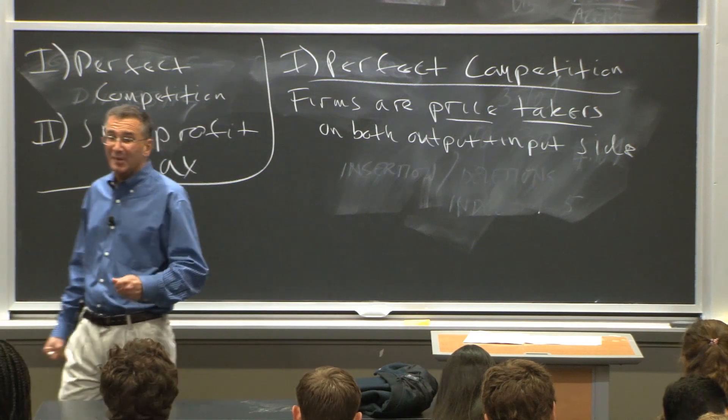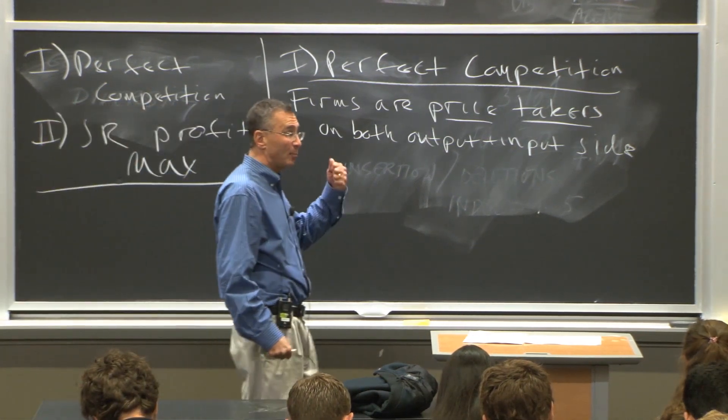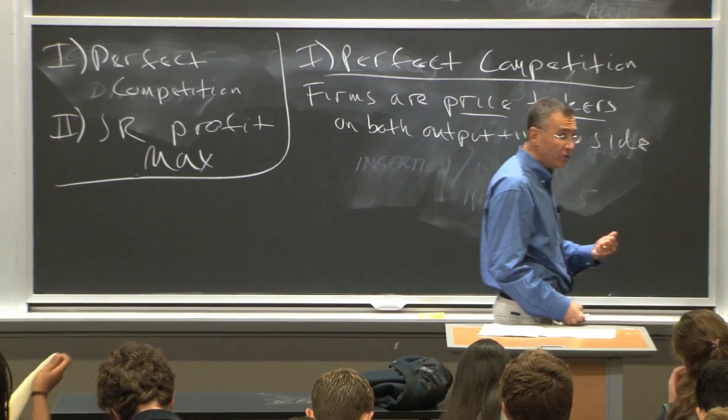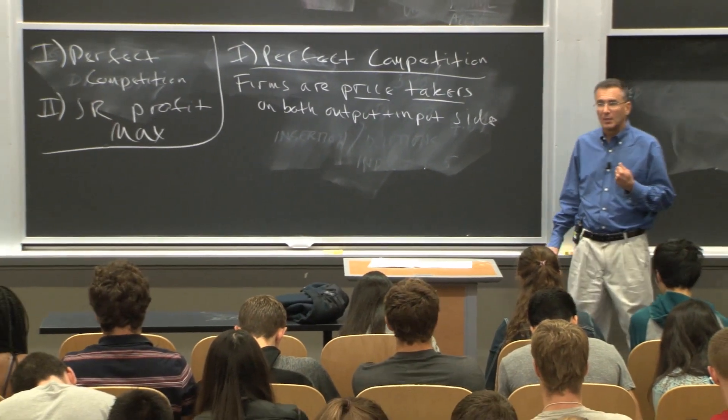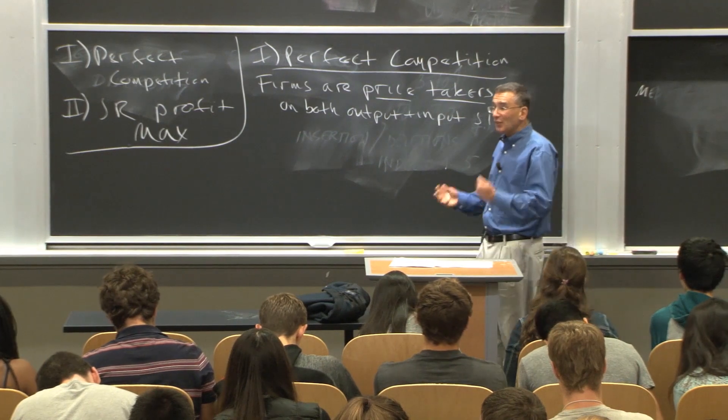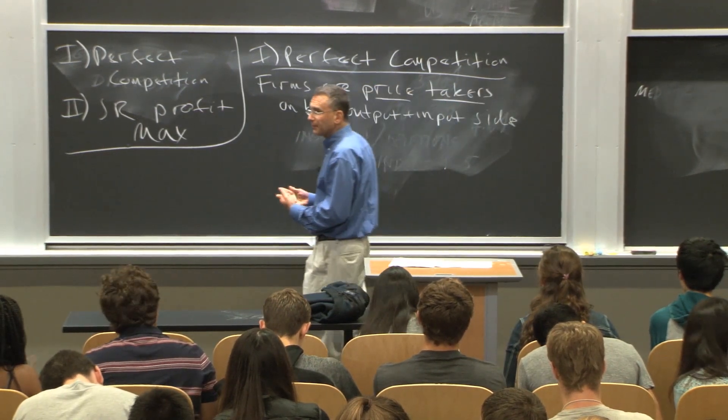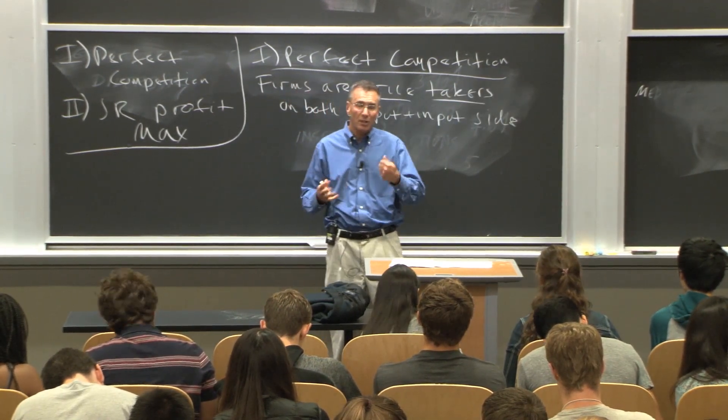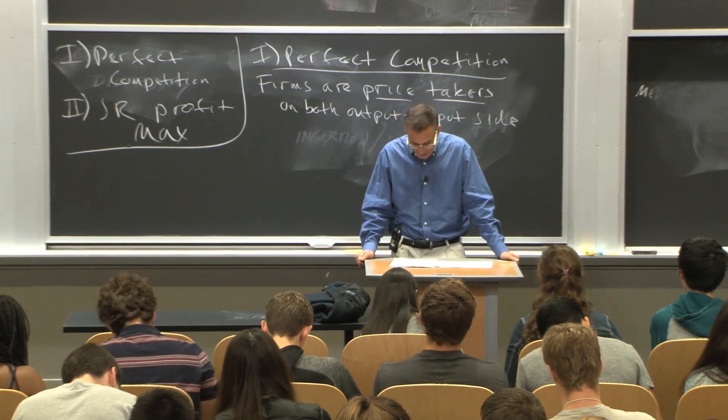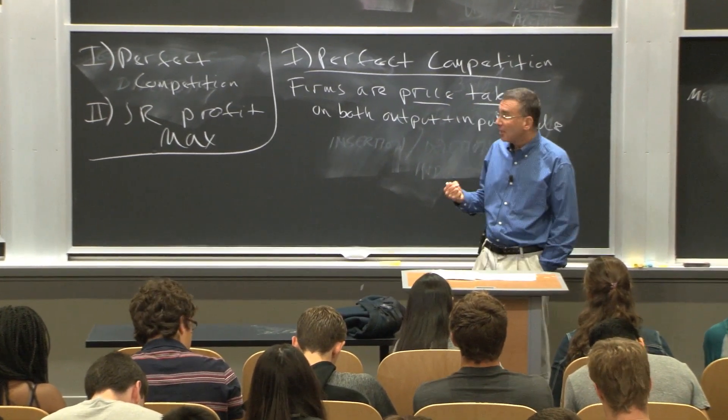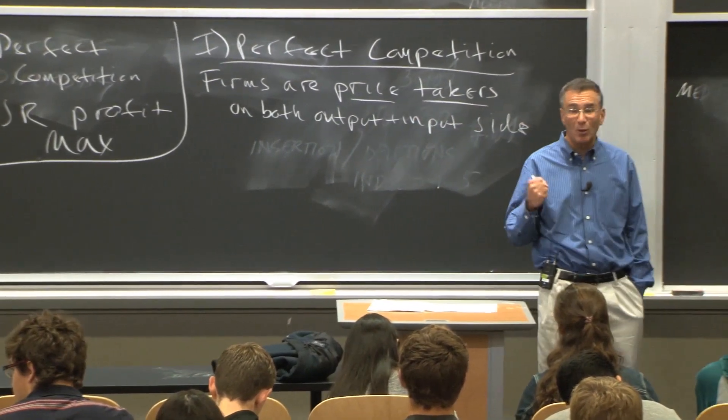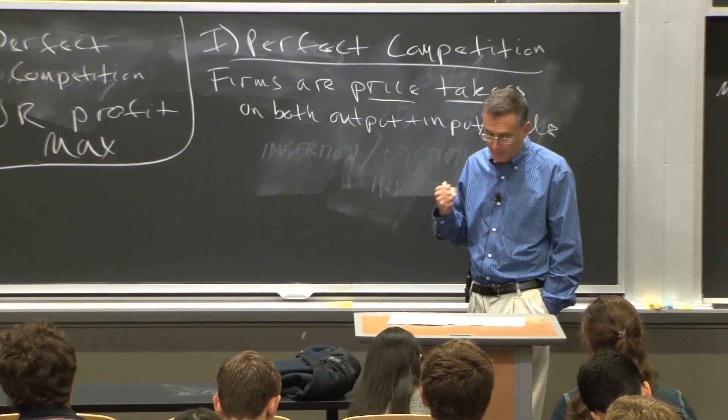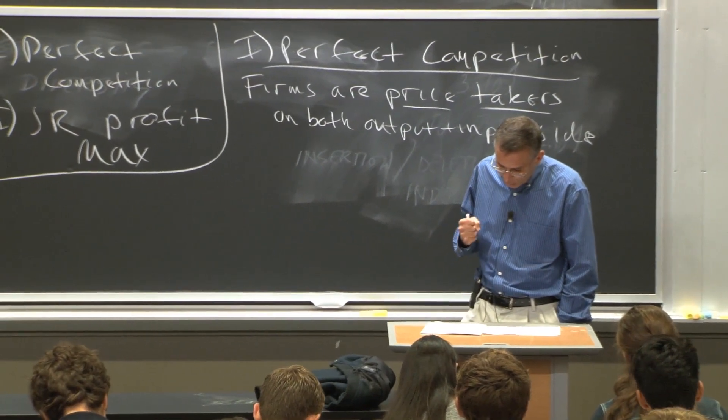What does that mean? That means that firms cannot independently influence the price that is charged for their goods or the price they pay for their inputs. That the firm doesn't in any way set the price, either the price that they charge for their goods or the price that they pay for their inputs. No action they can take will affect those prices.